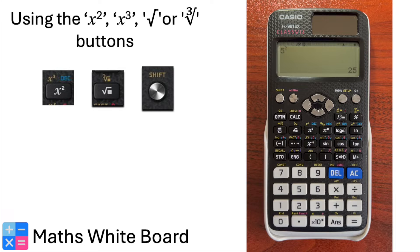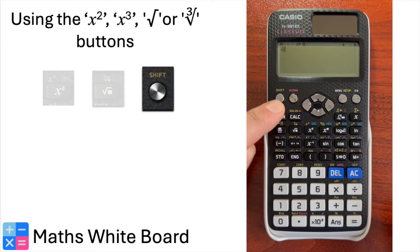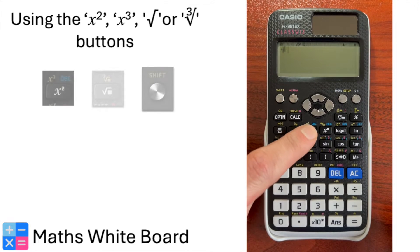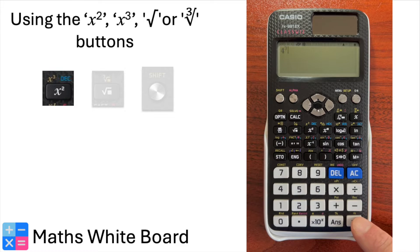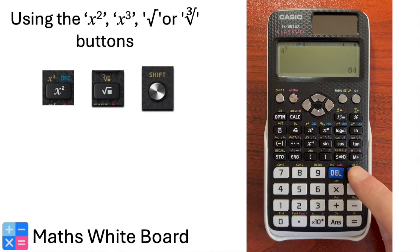Next, the cubed function — this raises a number to the power of 3. To cube the number 4, enter 4, then select Shift before pressing squared. By selecting Shift, the calculator activates the function shown in yellow on the calculator. This brings up the cubed function. Selecting equals, and you will see the result will be 64.